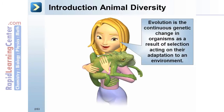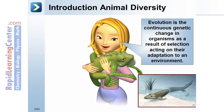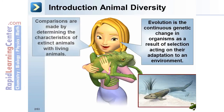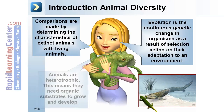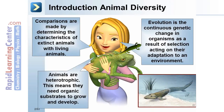Introduction to Animal Diversity. Evolution is the continuous genetic change in organisms as a result of selection acting upon their adaptation to an environment. Comparisons are made by determining the characteristics of extinct animals with living animals. Animals are heterotrophic, which means they need organic substrates to grow and develop.